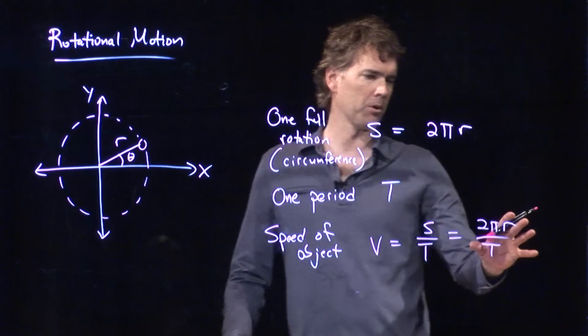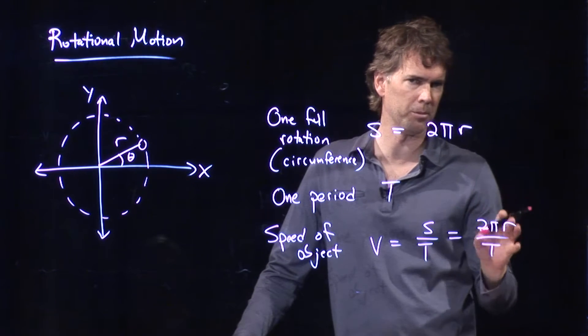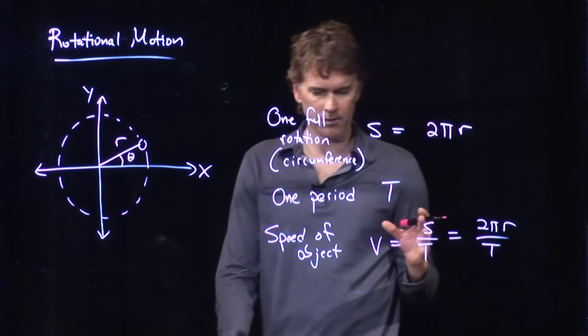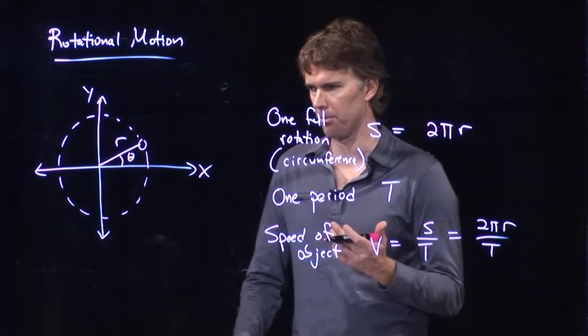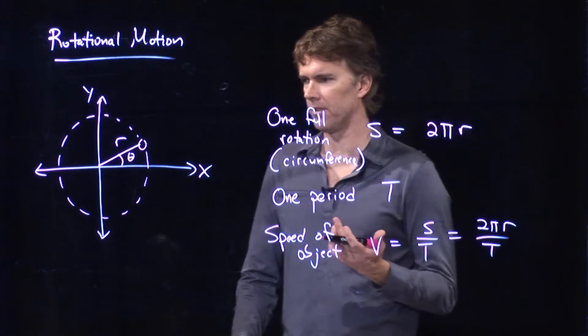And the units work out, right? r is meters, t is seconds, that's meters per second. Everything else is unitless. Let's talk about the merry-go-round problem and see if we can make some sense of this.